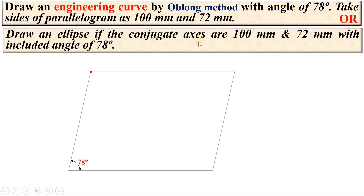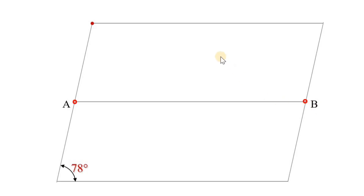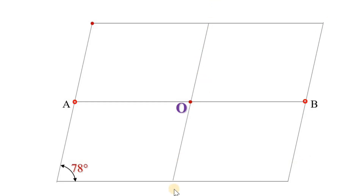If you look at this description, I have taken the two conjugate axes as 100 mm and 72 mm with included angle 78 degrees. Now take the midpoint of this line, similarly over here, and give the names A and B. Draw the horizontal line. Next, mark the midpoint of this AB line and give the name O. With the help of the scale, draw a line parallel to AB passing through point O, and give the name CD.